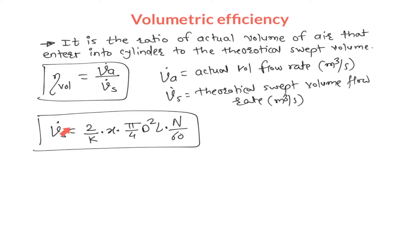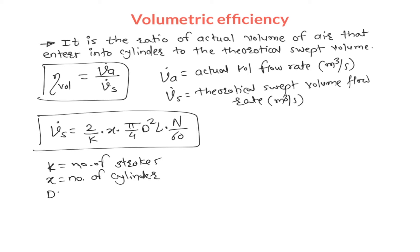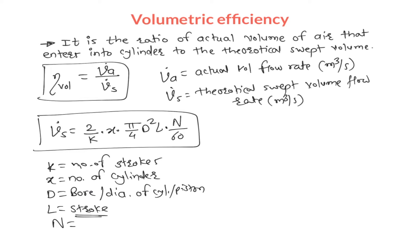In this formula for theoretical swept volume flow rate, k is the number of strokes — for a two-stroke engine k is 2, for a four-stroke engine k is 4. x is the number of cylinders — for one cylinder x equals 1, for two cylinders x equals 2. d is the bore diameter, which is the diameter of the cylinder and piston. l is the stroke length, or stroke of the piston. n is the RPM of the crank in revolutions per minute, and we divide by 60 to convert to per second.